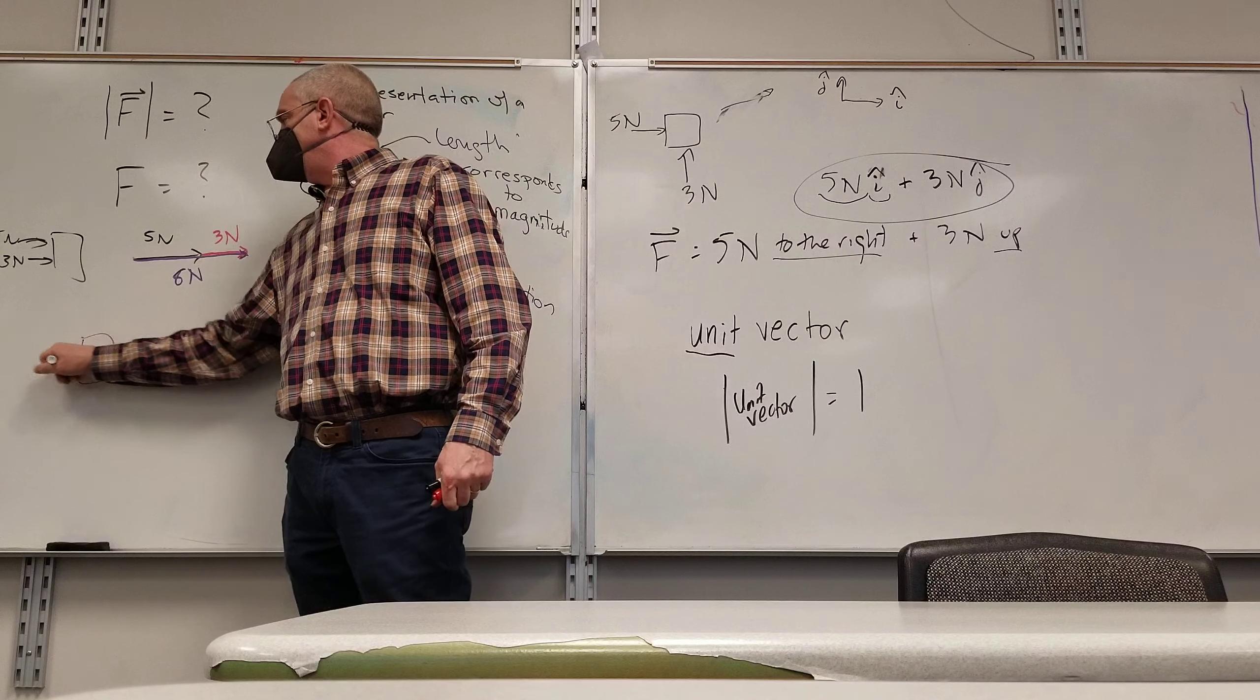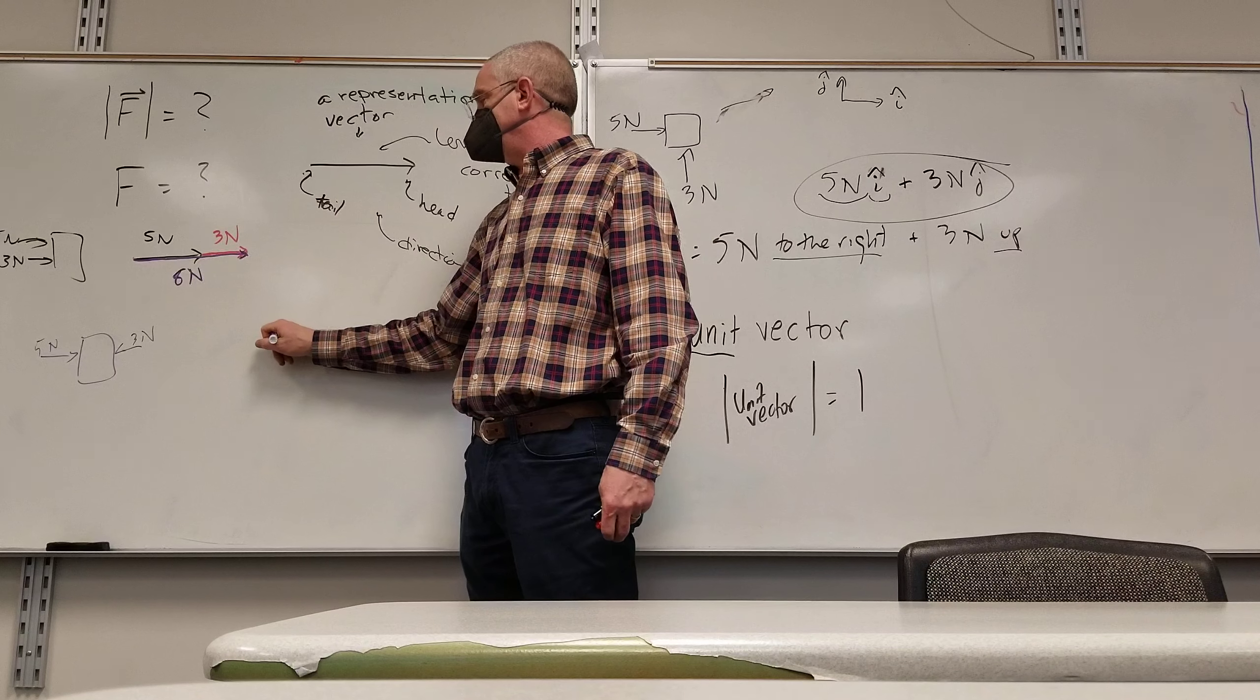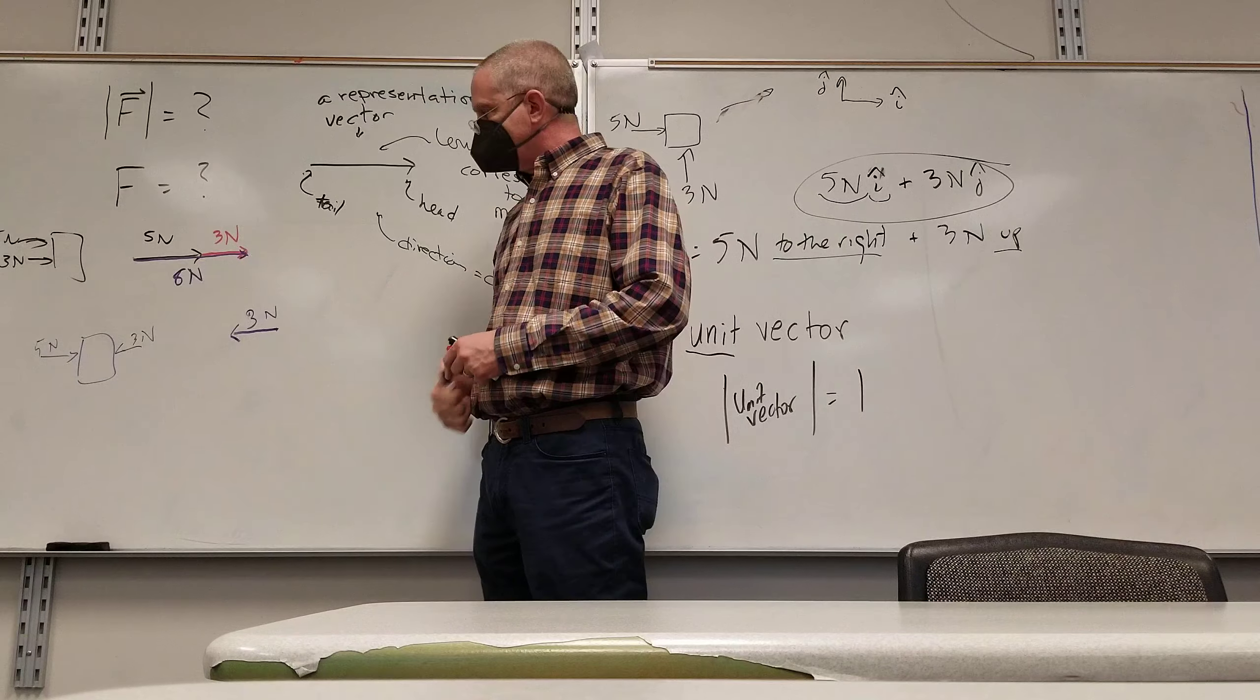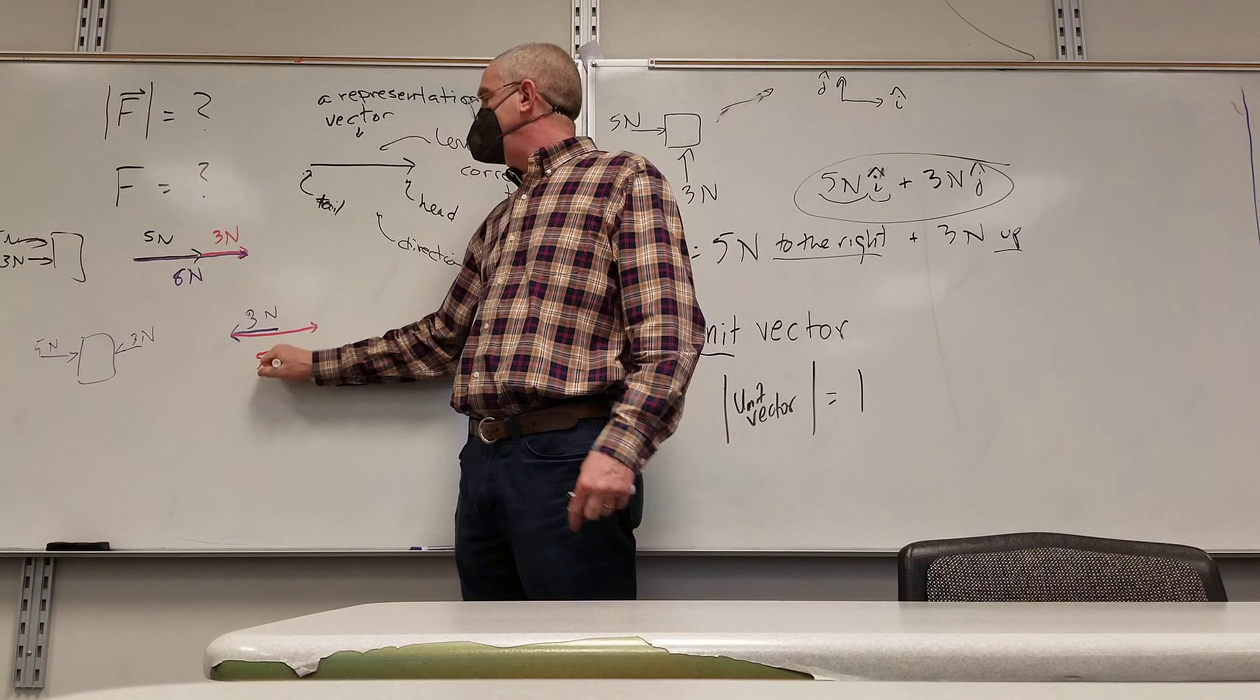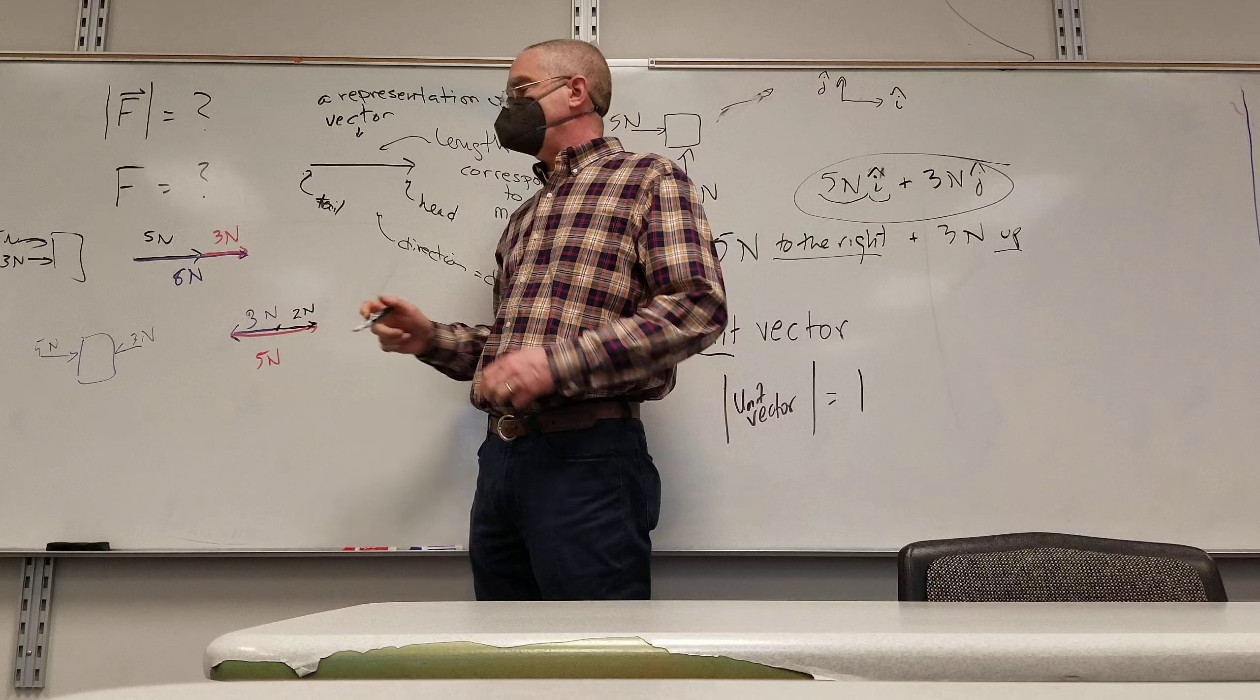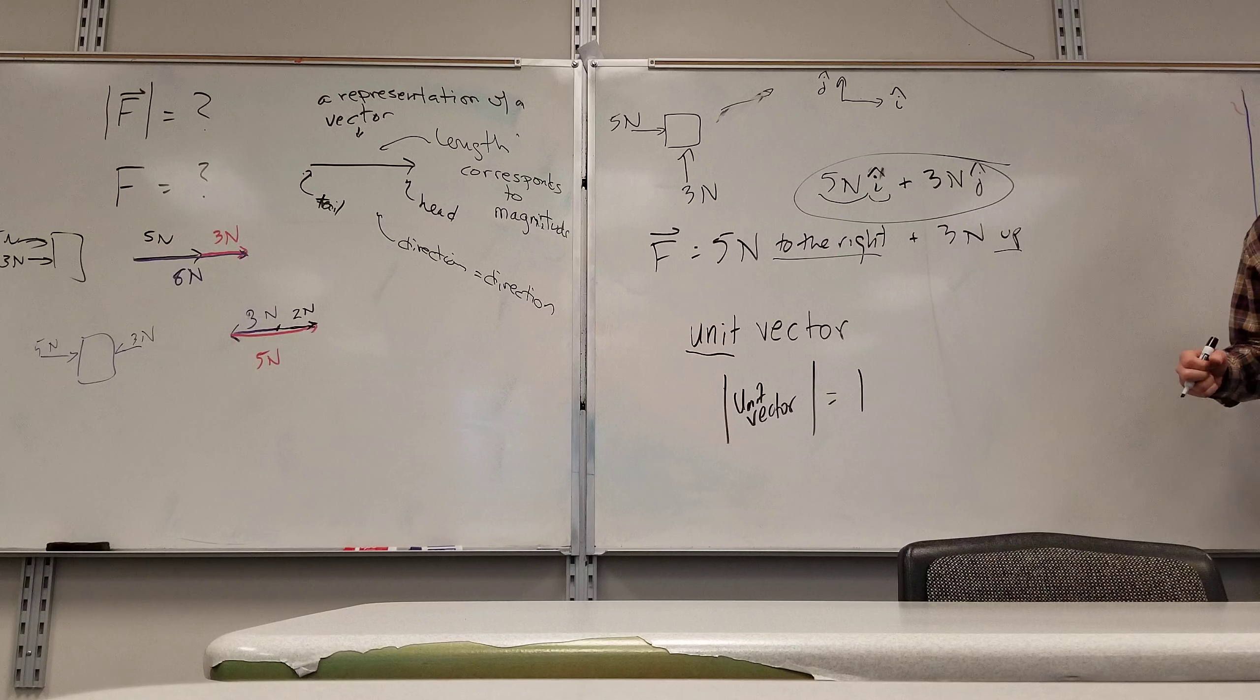That next example, 5 newtons to the right and 3 newtons to the left. I start with one of the two vectors, doesn't matter which one. This time I'll start with a 3. I pick my starting point, I draw one that's 3 newtons long. Now, I'm here. I draw my 5 newton vector, which is to the right. And my resultant is from where I started to where I ended. And that's 2 newtons to the right. Now, in a one-dimensional problem, it's a whole lot easier just to go 5 minus 3 is 2. But we're setting up for two dimensions.